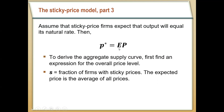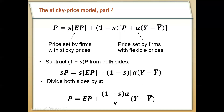We can take this information and combine it to get an aggregate price level for the entire economy. We need to know that some fraction S of firms have sticky prices, and the remaining fraction 1 minus S are firms with flexible prices that can change in response to different economic conditions. The overall price level P is just a weighted average of the price set by sticky price firms and the price set by flexible price firms — S times EP, plus 1 minus S times the flexible price.